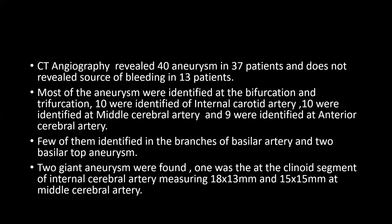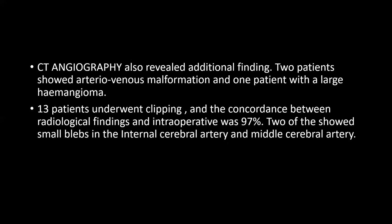CT angiography revealed 40 aneurysms in 37 patients and did not reveal a source of bleeding in 13 patients. Most aneurysms were identified at bifurcations and trifurcations. Two giant aneurysms were found: one at the clinoid segment of the ICA measuring 18×13 mm, and another at the MCA measuring 15×15 mm. Additional findings included 2 AVM malformations and 1 large cavernous angioma. Thirteen patients underwent clipping, and concordance between radiological and intraoperative findings was 97%. Two small blebs in the ICA and MCA were not identified on CT angiography.